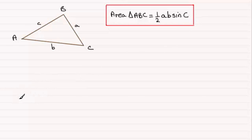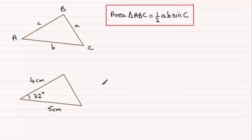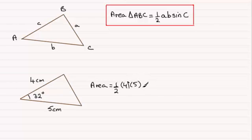So it's a very easy formula to work with. If you had a triangle where that side here is 4cm, this one here is 5cm, and the included angle is 32 degrees, we don't have to label the triangle ABC. All we need is two sides and the included angle. So when it comes to working out the area, we can say the area of the triangle is equal to a half times the product of the two sides — that's 4 times 5 — times the sine of the included angle, which is 32 degrees.